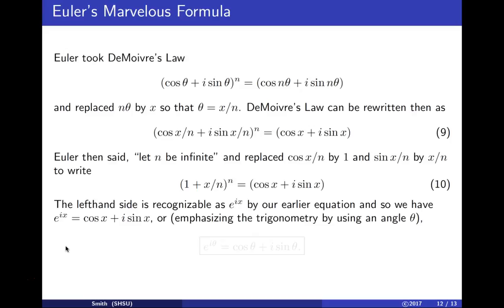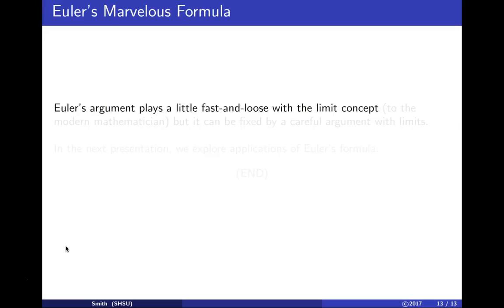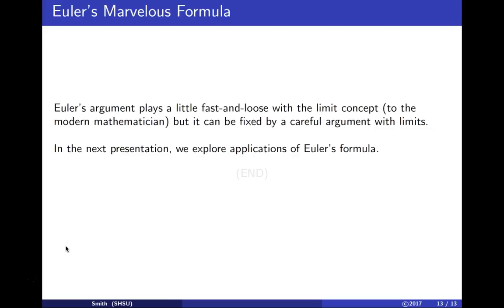To emphasize the trigonometry, we use θ instead of x: e^(iθ) = cos(θ) + i·sin(θ). Euler's argument is somewhat loose with limits. It took mathematicians another century to work rigorously with limits, but Euler's formula can be justified by careful limit analysis. There are many applications of Euler's formula, which we'll explore in the next lecture.